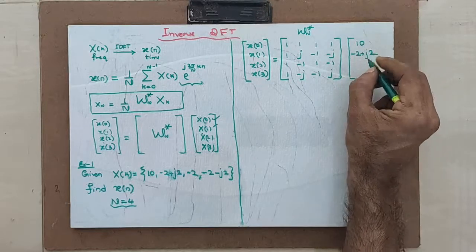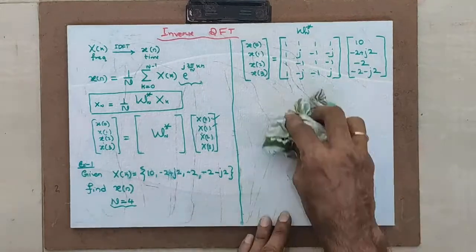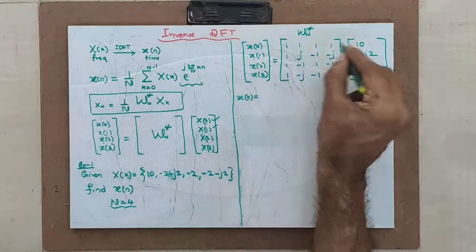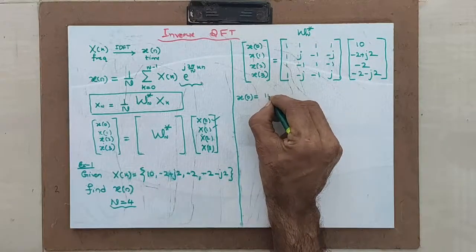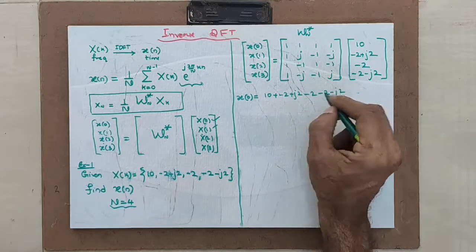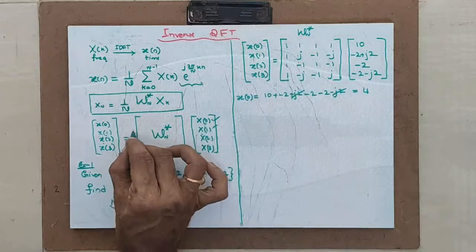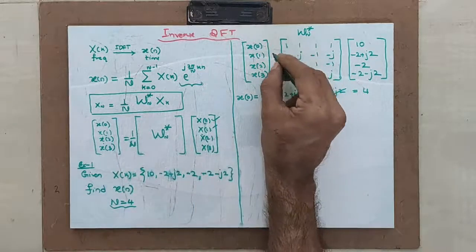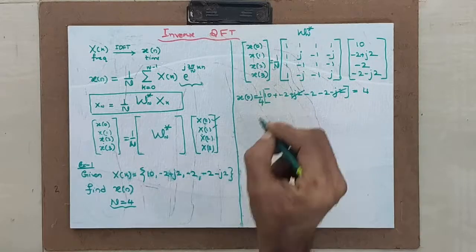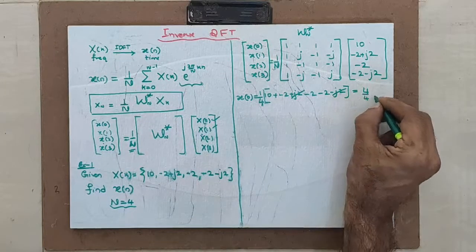To find x0, multiply the first row by the input column: 1 times 10 plus 1 times (minus 2 plus j2) plus 1 times (minus 2) plus 1 times (minus 2 minus j2). The j2 terms cancel, giving 10 minus 6 equals 4. But one important missing point: there is a 1 by N factor. So x0 equals 4 divided by 4, which equals 1.